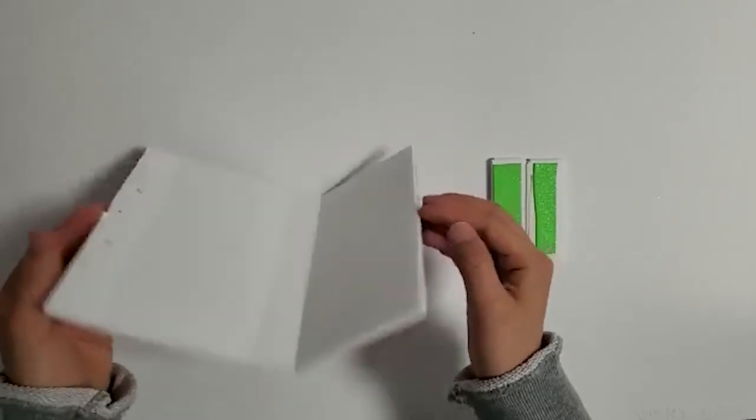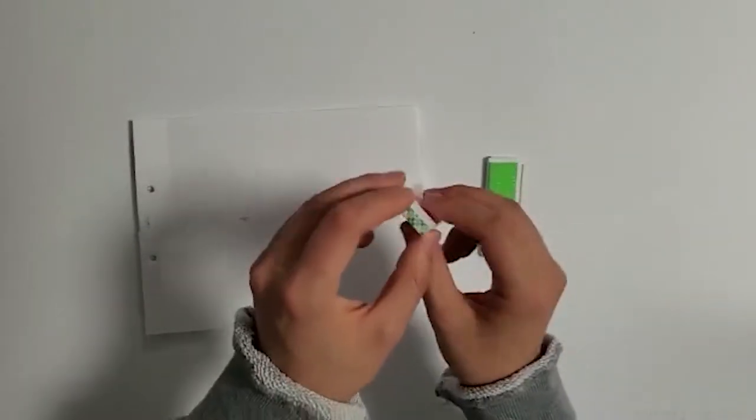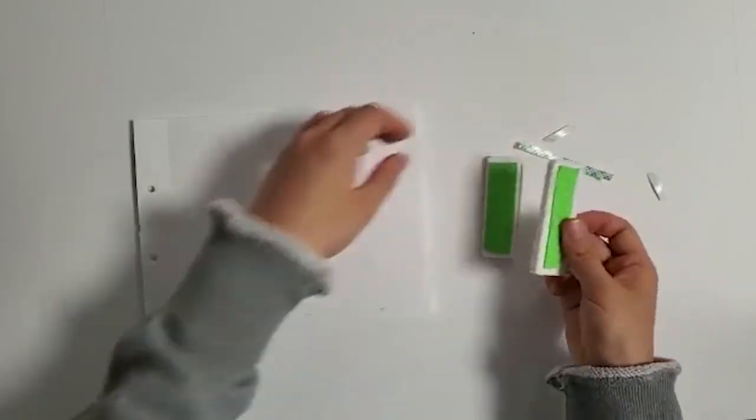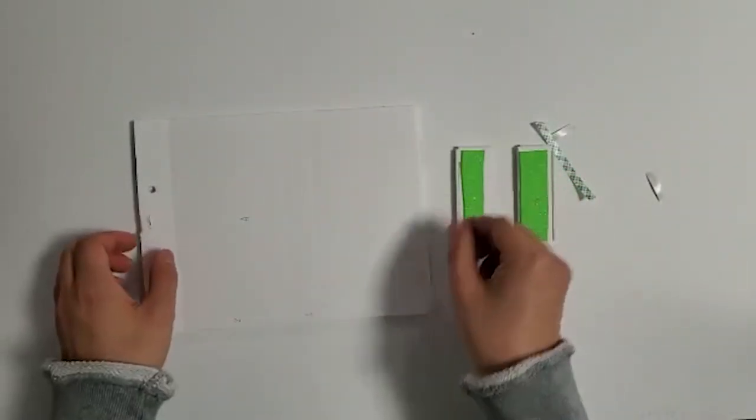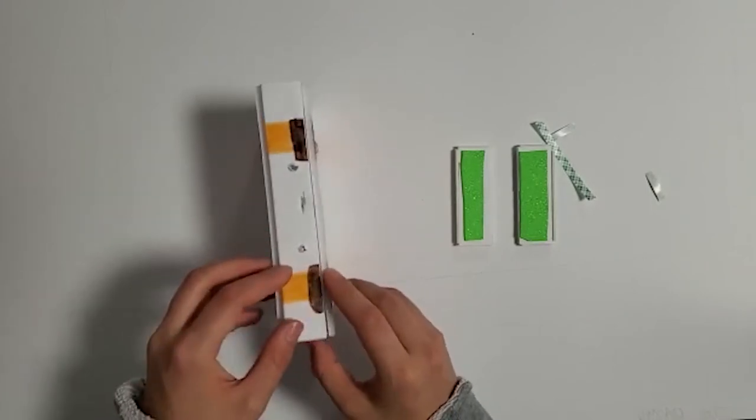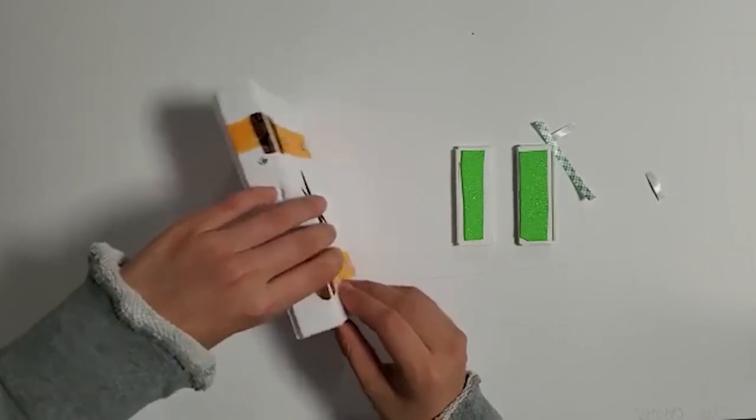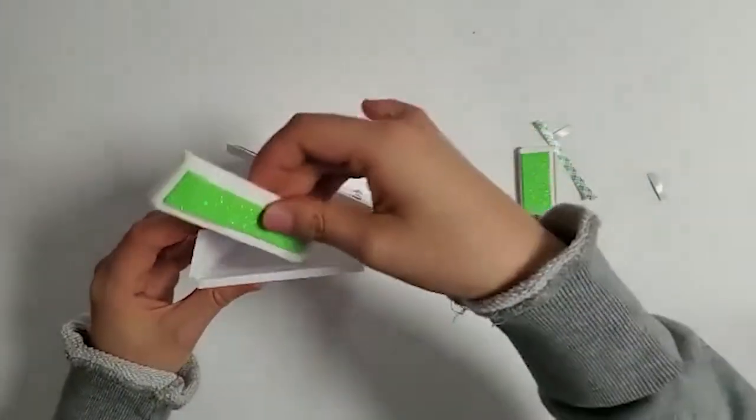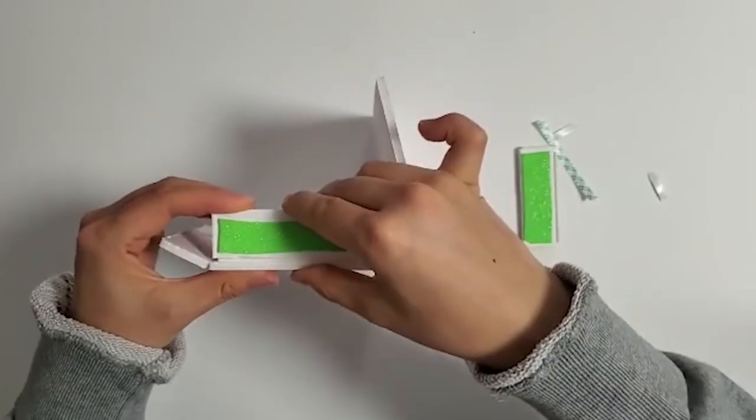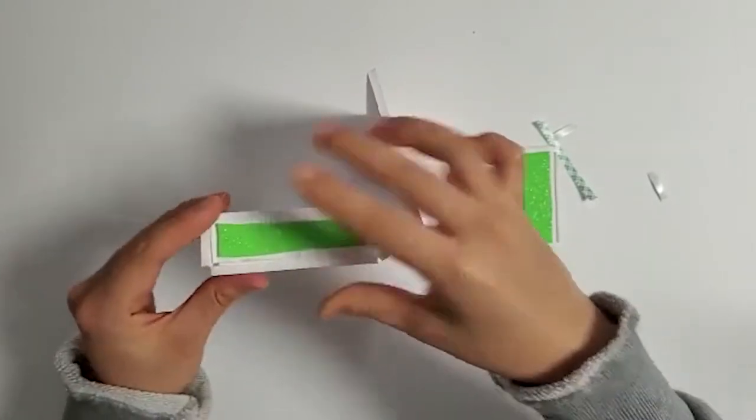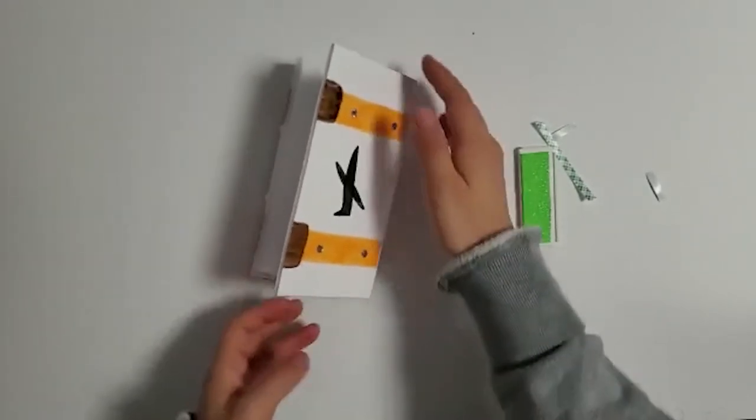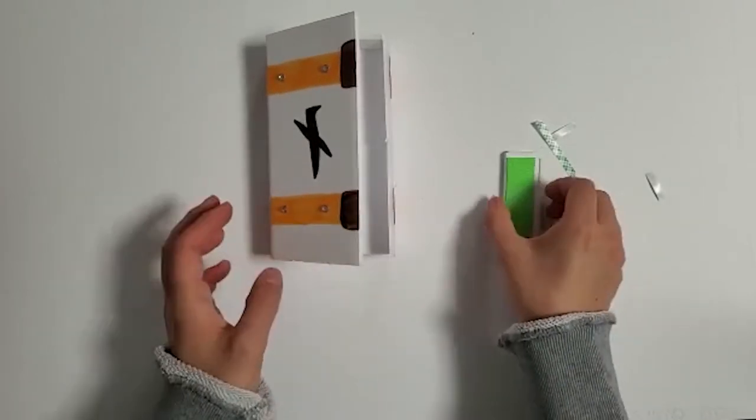Now, let's put the briefcase together. Take the backings off the tape on one of the B pieces. Fold up the A piece into a rectangle and stick the B piece on one side so that the long sides and the short sides are lined up. Then, repeat for the other side.